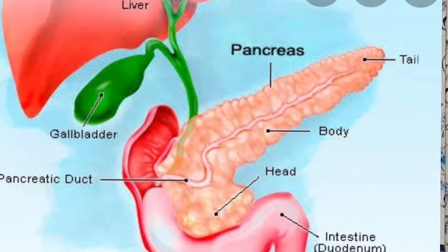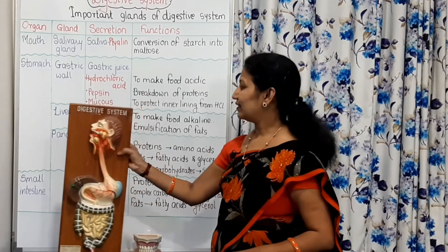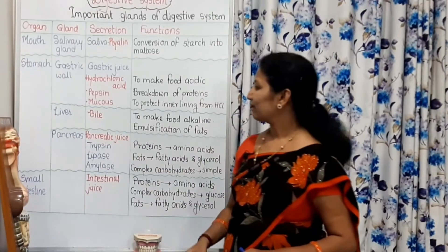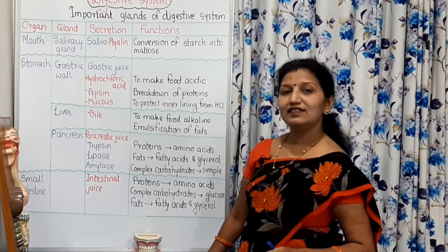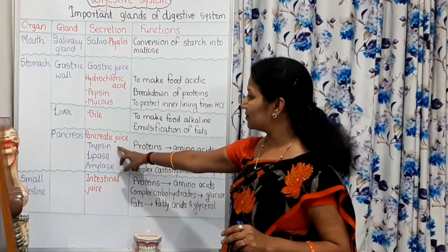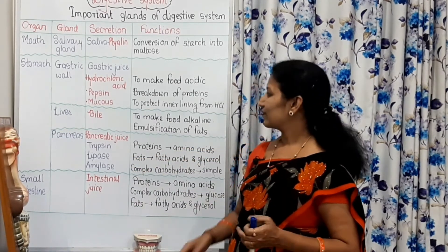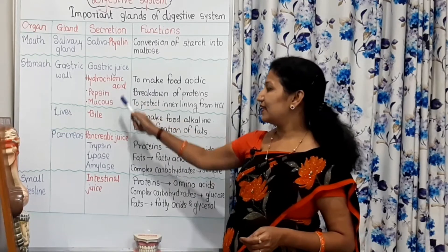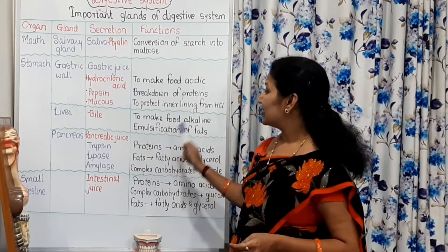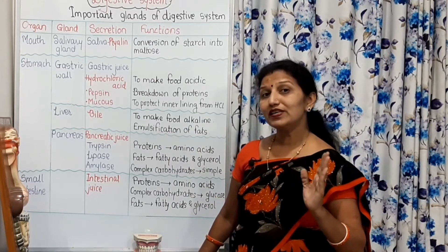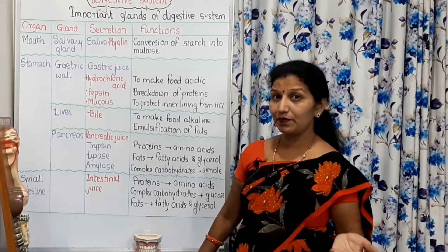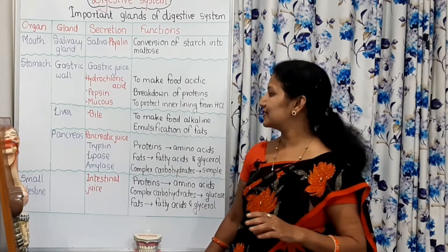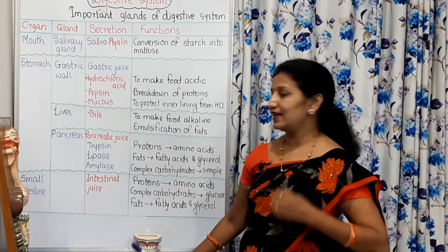Then, pancreas. Here are the pancreas, and the pancreas secretes pancreatic juice. This pancreatic juice contains three enzymes: trypsin, lipase, and amylase. Trypsin acts on proteins — both pepsin and trypsin act on proteins. Proteins are converted into amino acids by the action of trypsin, since proteins are made up of amino acids.